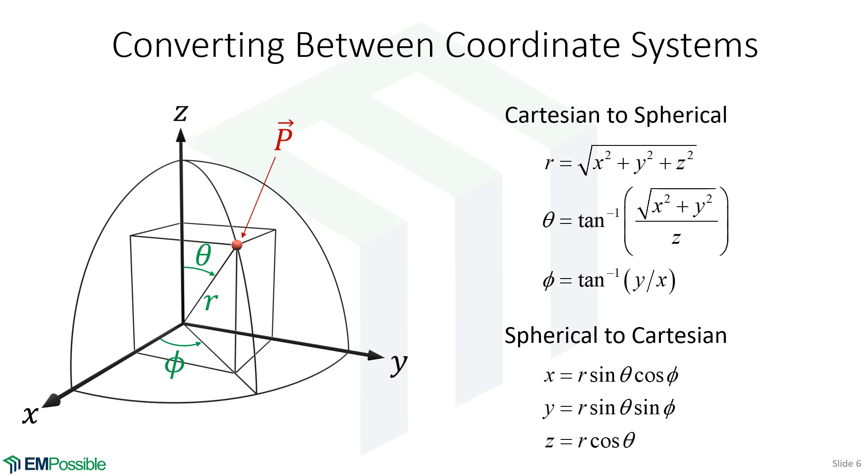Spherical to Cartesian is much easier. So z is simply r times cosine theta. Then x and y will both be r times sine theta, and so they only differ now with what we do with phi - in x we have a cosine phi and in y we have a sine phi. So as I mentioned, both sets of equations we're going to have to implement in Blender.